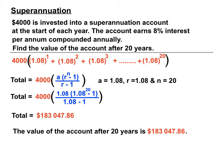To summarise the method: we applied the compound interest formula to each contribution, factorised out the $4,000, reversed the order of the bracket terms to recognise a geometric progression, then found the sum to N terms of that GP. These aren't easy questions, but each part — if you're careful and sensible — isn't too bad mathematically.